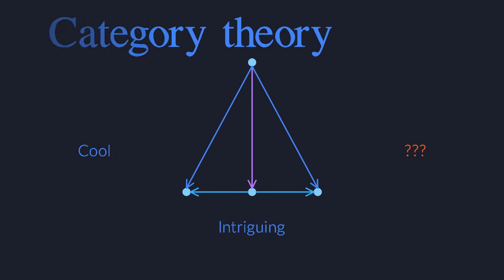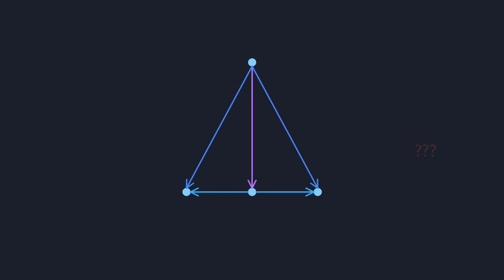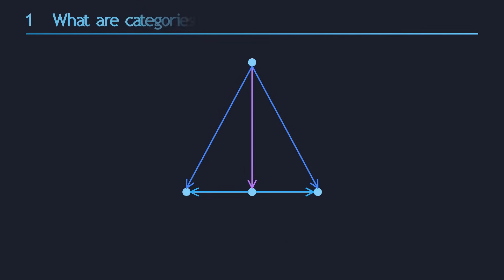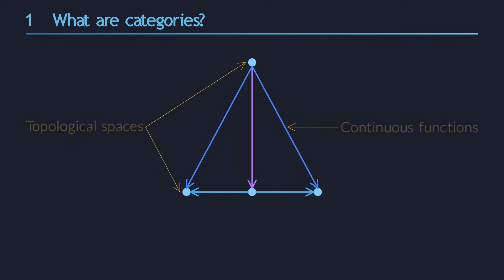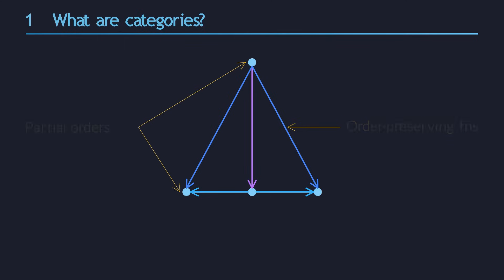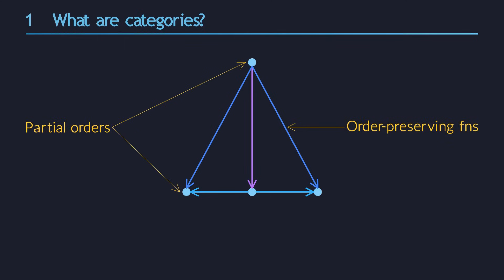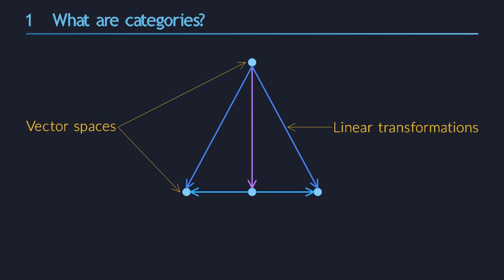So what is category theory about? Honestly, it's about everything. It seems that all of mathematics can be reformulated in the language of categories. That's exactly where all those deep connections come from. Category theory unifies all of math in a single rich language.